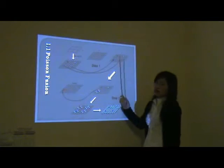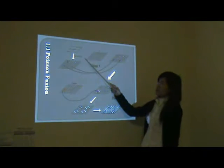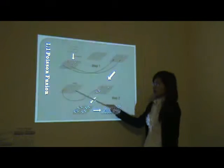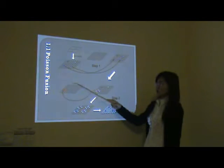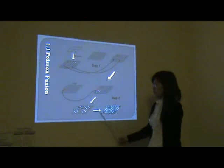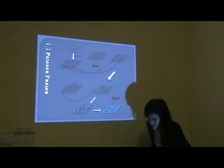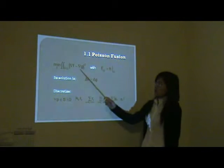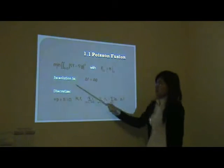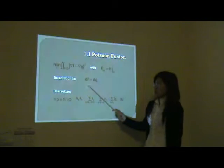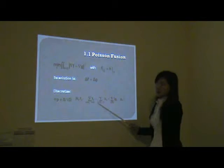How to do it? First, use the multispectral image as hard boundary conditions. Then, interpolate the objective image under the gradient guidance of the panchromatic image. At last, we can retrieve the objective image. It can be formulated as a minimization problem with hard boundary conditions, and its solution is the Poisson equation. We can differentiate it and solve these linear equations.